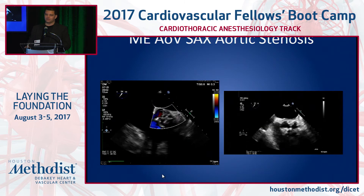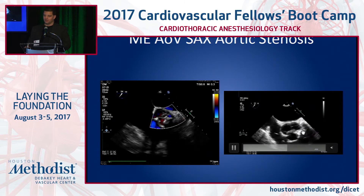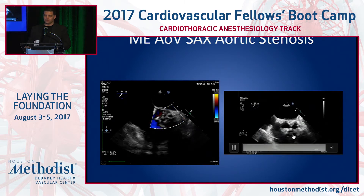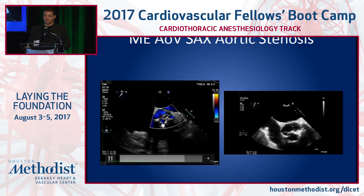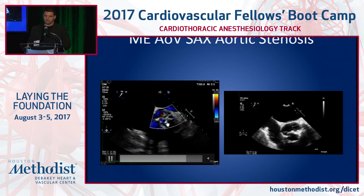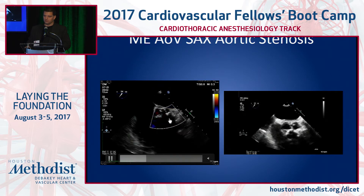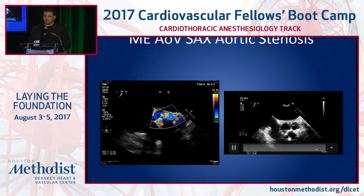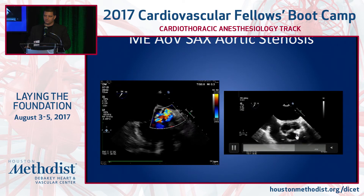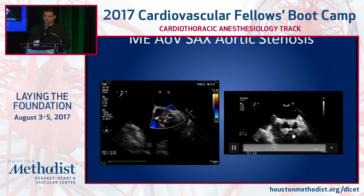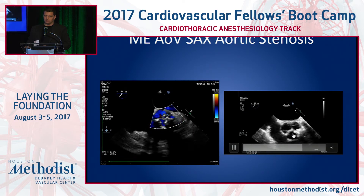Short axis aortic valve, midesophageal. You have a stenotic valve. You can see the three cusps not quite opening properly. It may be associated with aortic regurgitation or not — you can see the color Doppler flow on one side and the non-color Doppler flow on the other. Clearly calcified, thickened, not opening and not closing properly.